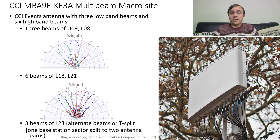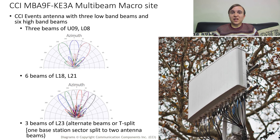This features a CCI antenna with three low band beams each with U09 and L08, and six high band beams each with L21 and L18. The site also radiates three sectors of L23, which will either be through alternating beams — say using beam one, three and five — or through the use of T-splitters to connect one 2300 MHz base station sector to two beams at the antenna, which I show in the schematic on the next slide.